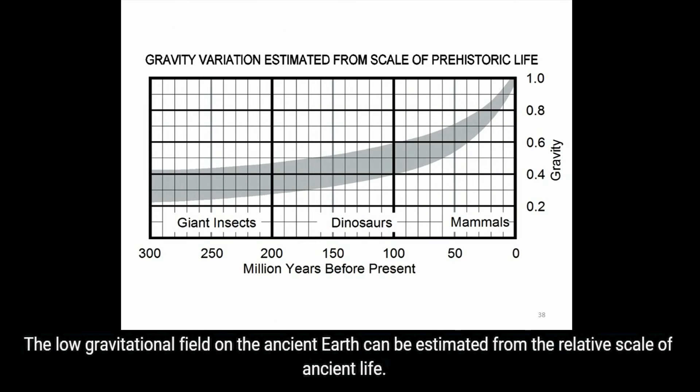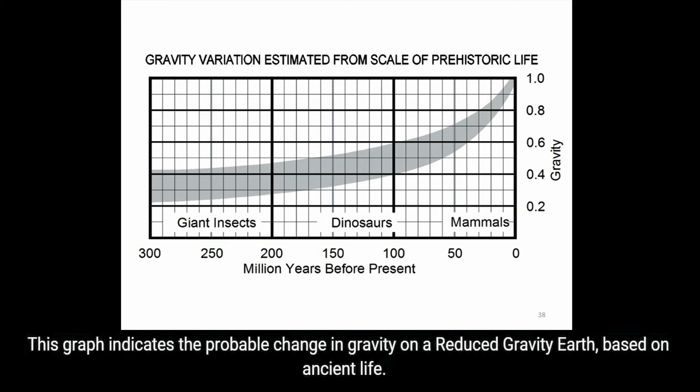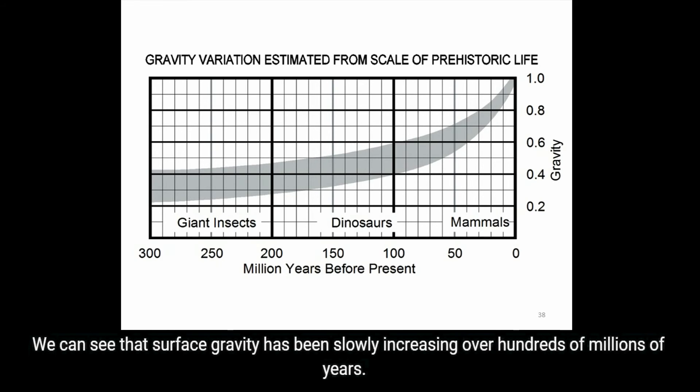The low gravitational field on the ancient Earth can be estimated from the relative scale of ancient life. This graph indicates the probable change in gravity on a reduced-gravity Earth, based on ancient life. We can see that surface gravity has been slowly increasing over hundreds of millions of years.